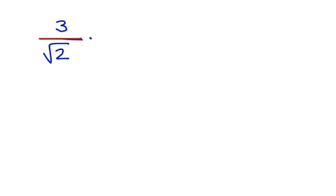We do that by multiplying both the numerator and the denominator by whatever square root is in the denominator to begin with. So here we would multiply 3 divided by the square root of 2 times the square root of 2 over the square root of 2. Now we multiply across.